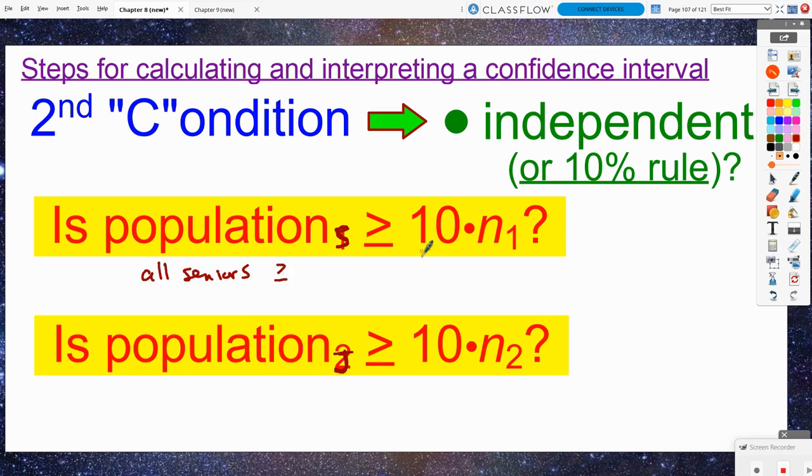Instead of saying pop one, we'll say pop S and we'll have pop J. So we'll say all seniors greater than or equal to, now my sample size was 50, so 10 times 50. Can I assume that there are more than 500 seniors from this school? Because we're not considering out of all schools, but just this one school in general. And then can I also assume that there are over 500 juniors from this school, greater than or equal to 500?